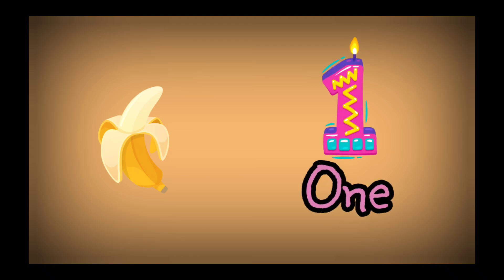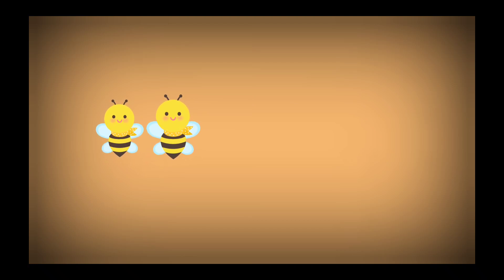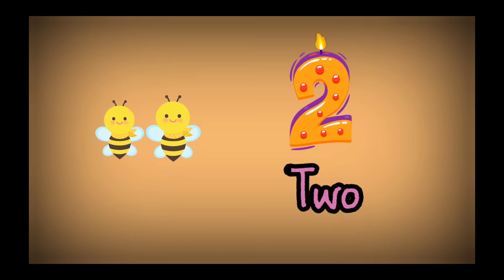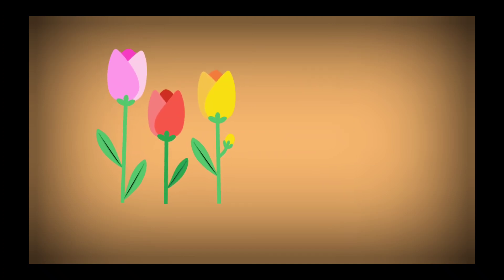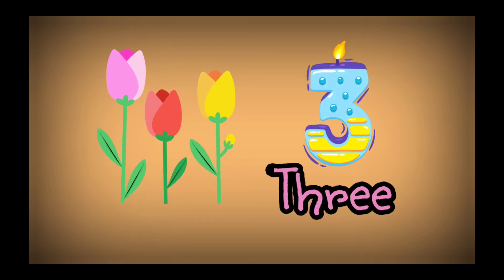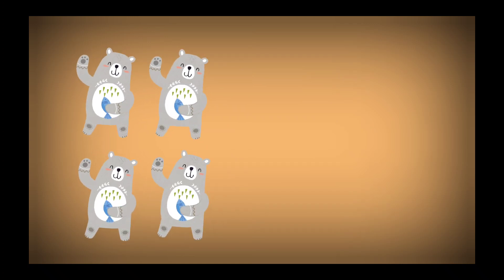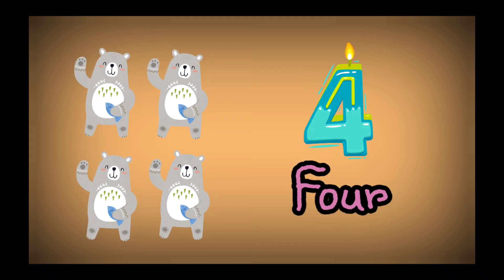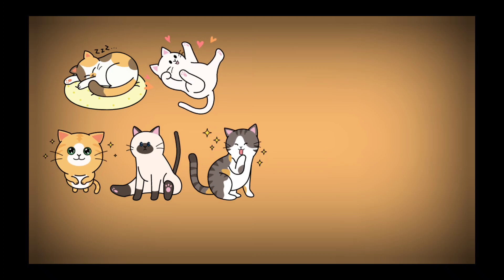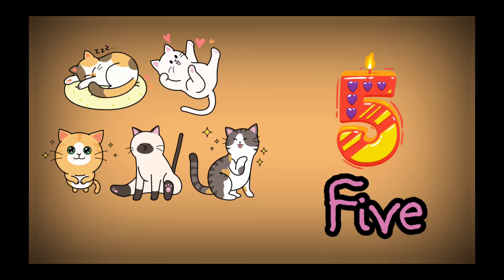Good! Now let's learn the numbers around us. Let's count the things around us. How many bananas are there? There's only one banana. How many bees are there? There are two bees. How many flowers are there? There are three flowers. How many bears are there? There are four bears. How many cats are there? There are five cats.